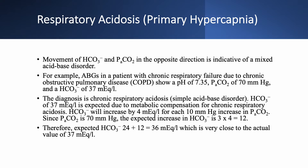For example, if we take ABGs of a patient with COPD — pH 7.35, PaCO2 70, bicarbonate 37 — we probably have a simple acid-base disorder. PaCO2 is 70 and pH is low, so we have respiratory acidosis, and bicarbonate went up, meaning both moved in the same direction. The PaCO2 increased by 30 from normal (40), so for each 10 increase, bicarbonate should go up by 4, giving 3 × 4 = 12. Expected bicarbonate is 24 + 12 = 36, very close to the actual 37. This confirms a simple compensated chronic respiratory acidosis.